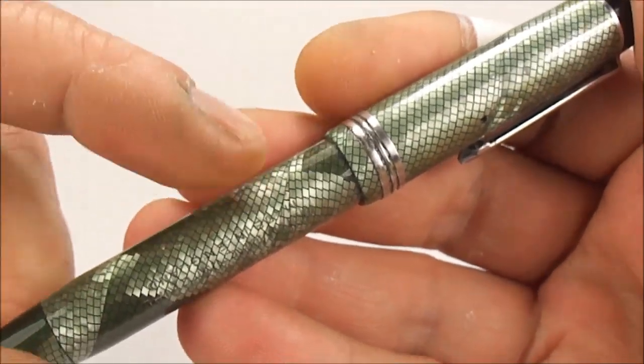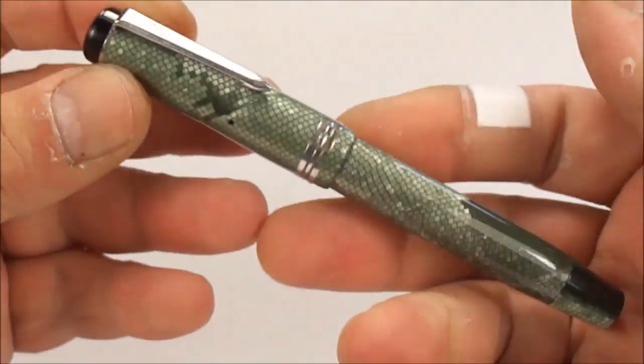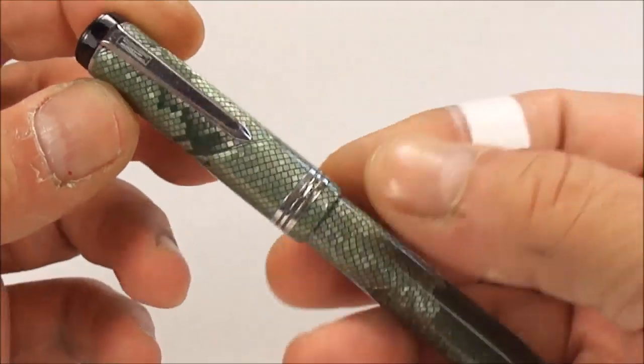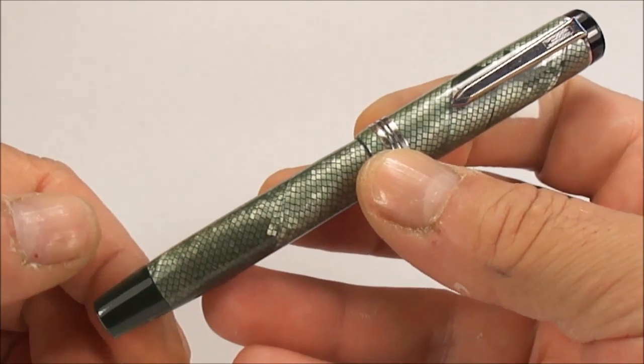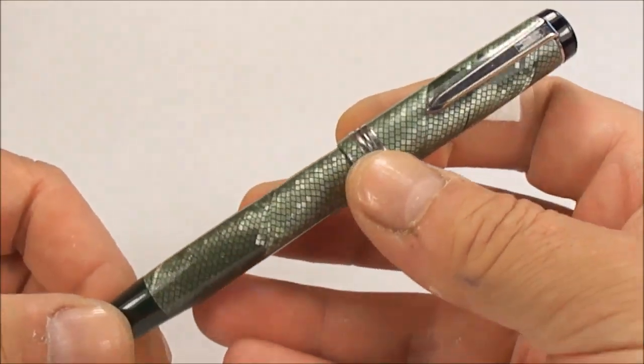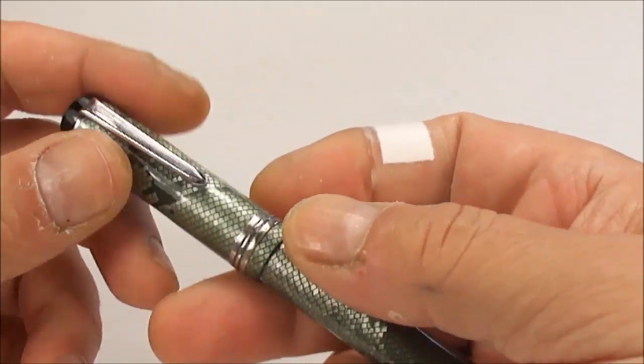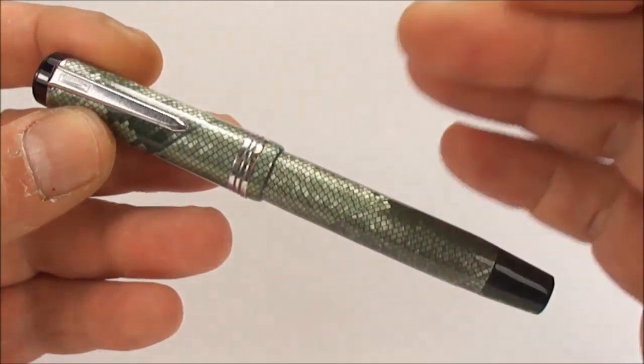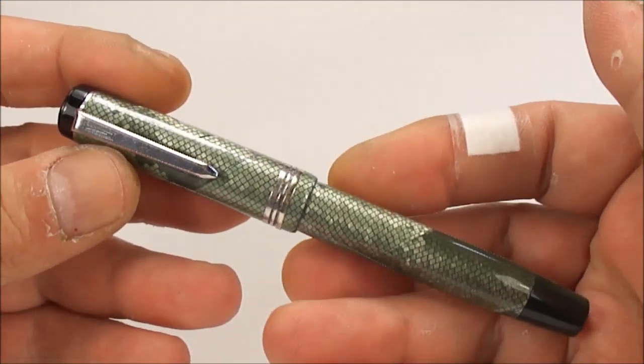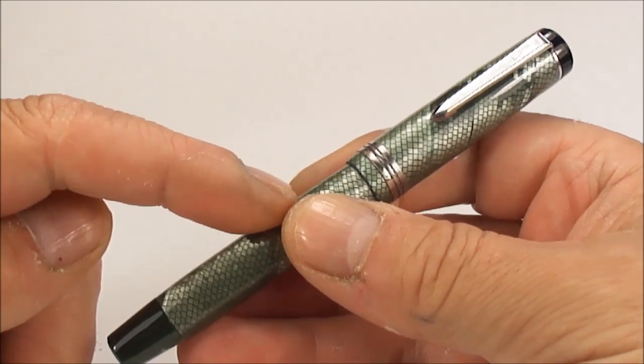As you can see, it comes in this green snakeskin effect, which is very much sought after. With it being this particular Mentmore Imperial, it makes it quite - I wouldn't say a rare pen - but I believe a very sought-after pen in absolutely superb condition. It's been fully restored and fully serviced.